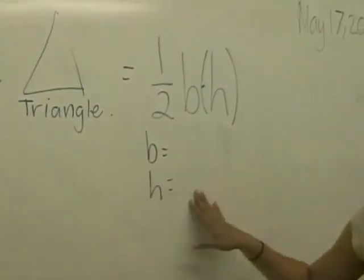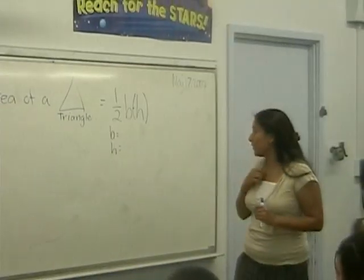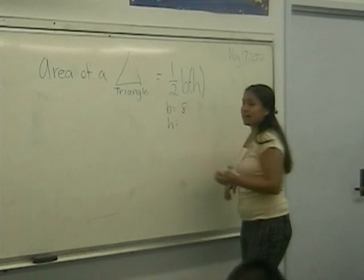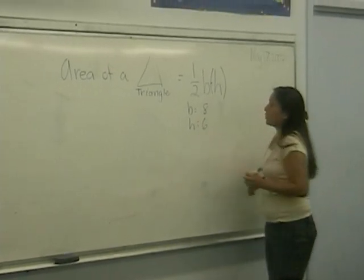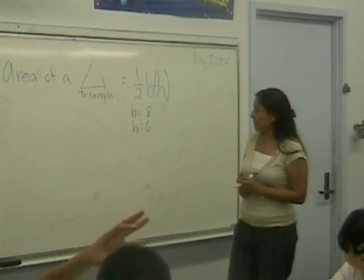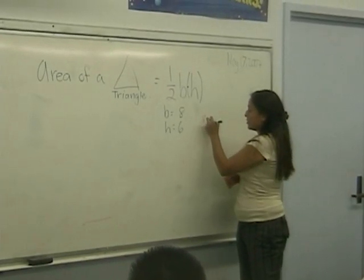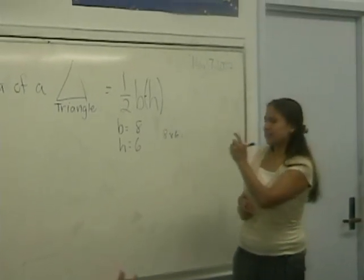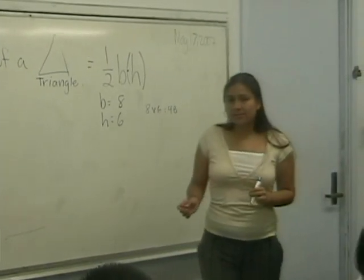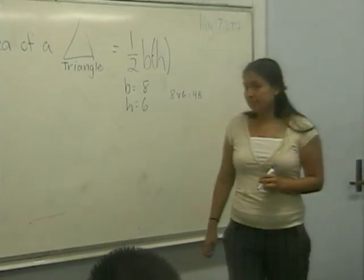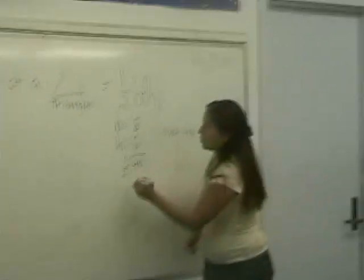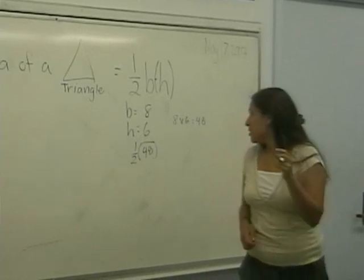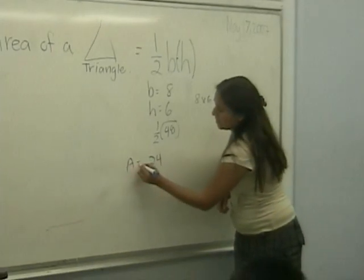So number one — what is the base and what is the height? Eight is the base, and the height is six. So what do I need to do first? Multiply — eight times six, which equals forty-eight. And then multiply by one half, which is twenty-four. So you should have gotten the area to be twenty-four.